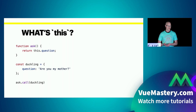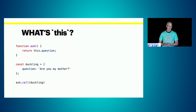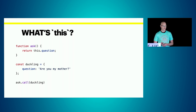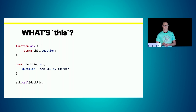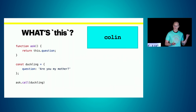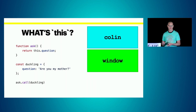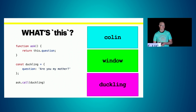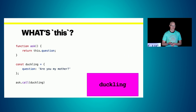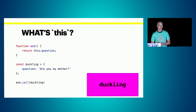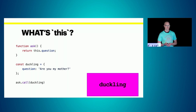Question number nine: we've got that same 'ask' function returning 'this.question', and a constant 'duckling' which is an object literal with a question property. This time we use the function's 'call' method, passing 'duckling' as the first argument. What's 'this'? Is it Colin, is it window, or is it duckling? If you answered duckling, you're right. The first argument passed to 'call' is the 'this' argument, letting you control what 'this' is bound to.